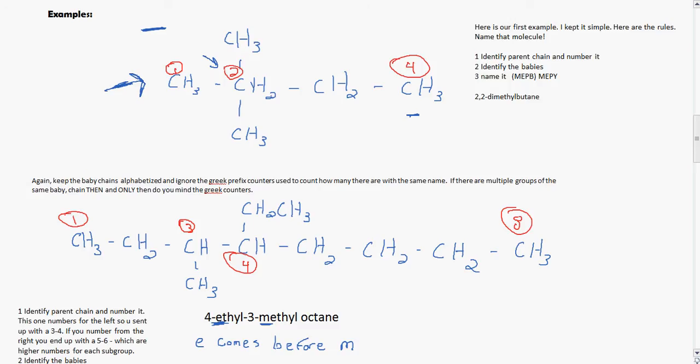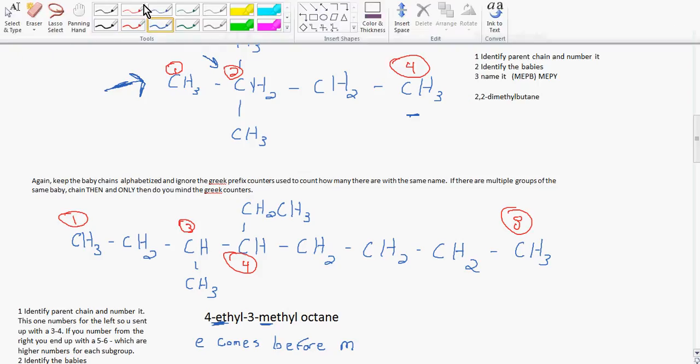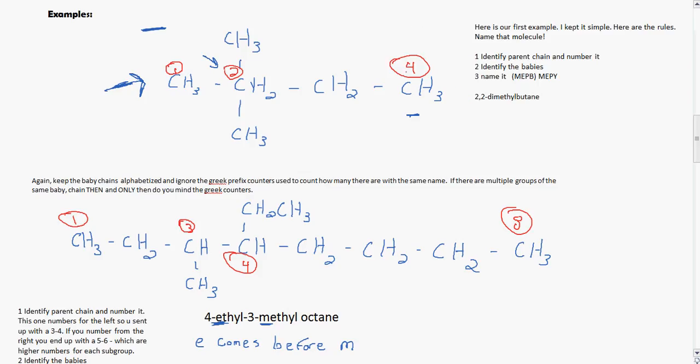Often times it may help you out to look at the name of the molecule and go backwards. You will get problems where it's just the name and you'll have to draw it. So if you go backwards and look at the name, you'll start with butane. So MEPB, you know it's a 4-carbon chain. And then moving one step further, dimethyl, you know that there's two methyl groups. And then 2,2, you know both those methyl groups are on the second carbon. So you can think of it that way as well, looking backwards.